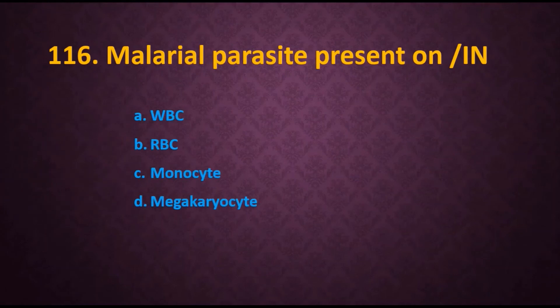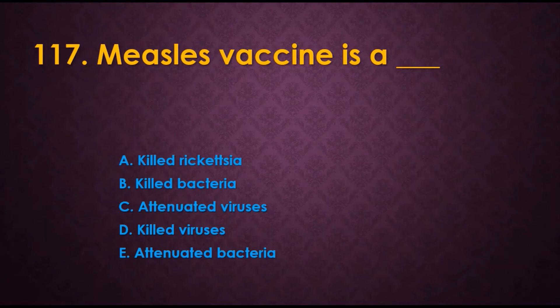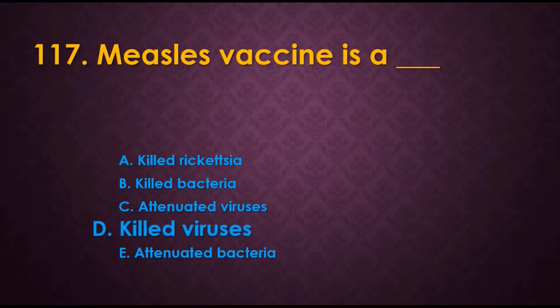Question 116: Malarial parasite is present in — options are: A) WBC, B) RBC, C) monocyte, D) megakaryocyte. The answer is RBC, that is red blood corpuscles. Question 117: Measles vaccine is — options are: A) killed Rickettsia, B) killed bacteria, C) attenuated virus, D) killed virus, E) attenuated bacteria. Measles is caused by a virus, so the answer is attenuated virus.